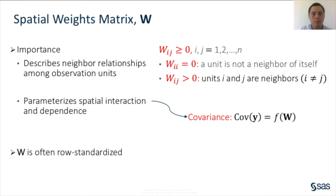The spatial weight matrix W plays an important role in spatial econometric modeling. We use the W matrix to describe neighbor relationships among observation units. In many practical applications, W is an n-by-n matrix with non-negative entries, where n is the number of spatial units. W_ij is positive if units i and j are neighbors. By convention, the diagonal elements of W are all zeros, because a spatial unit is not considered a neighbor of itself. We also use the W matrix to prioritize spatial dependence in spatial econometric modeling. In practice, the W matrix is often row-standardized.